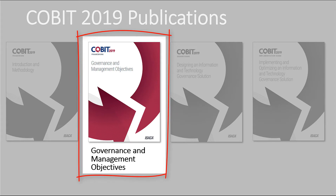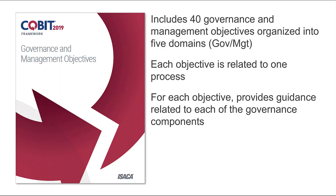This is very new — brand new to COBIT 2019 — so we're going to jump in and talk a little bit more about this. In order for information and technology to contribute to our enterprise goals, we must have Governance and Management Objectives, and they should be achieved. A Governance or Management Objective always relates to one process and a series of related components. A Governance Objective relates to a governance process, while the Management Objective relates to a management process.